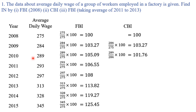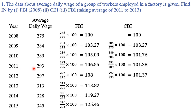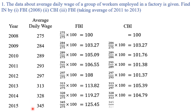This is where the answers start to differ between FBI and CBI. For 2011 the base is 2010: 293 divided by 289 into 100 is 101.39. For 2012 the current value is 297 and base is 293: 297 upon 293 into 100 is 101.37. Then 313 upon 297 into 100 is 105.39, 328 upon 313 into 100 is 104.79, and 345 upon 328 into 100 is 105.18. In the CBI method each preceding year is taken as the base year.